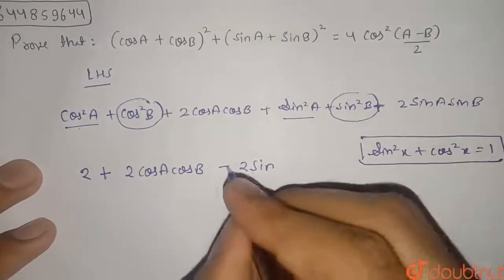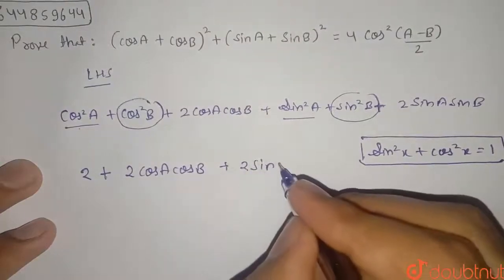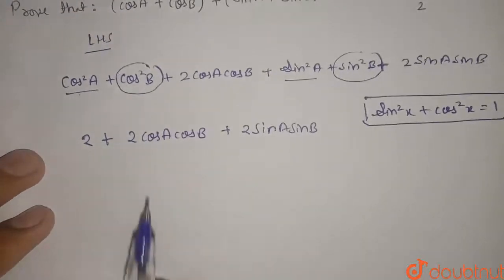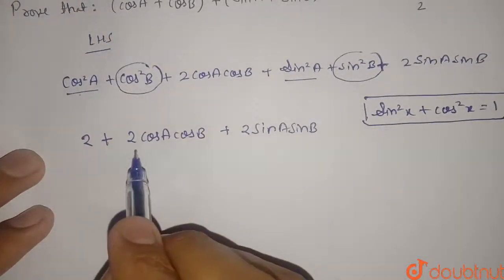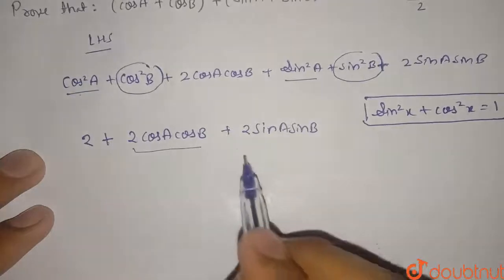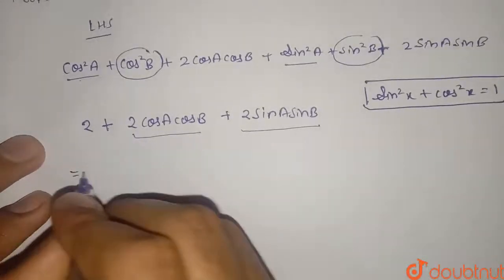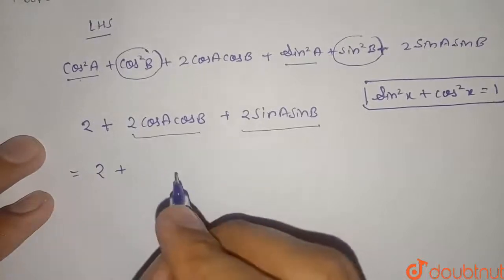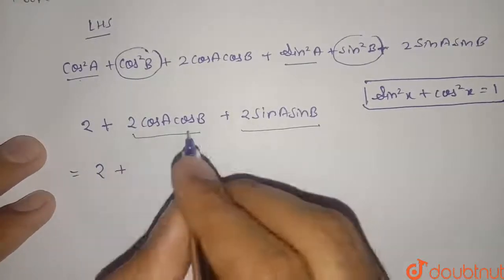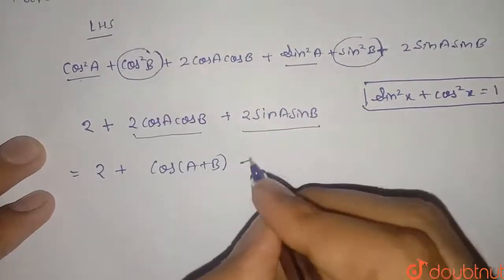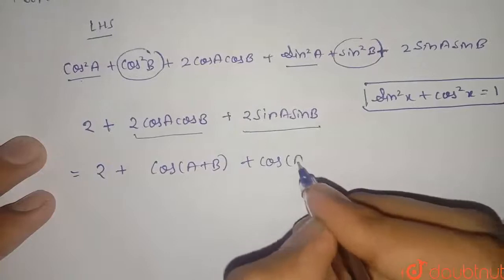So this will be 2 sin A sin B. Now I am using the formula of 2 cos A cos B here and formula of 2 sin A sin B here. So this will be 2 plus the formula of 2 cos A cos B is cos(A+B) + cos(A-B).